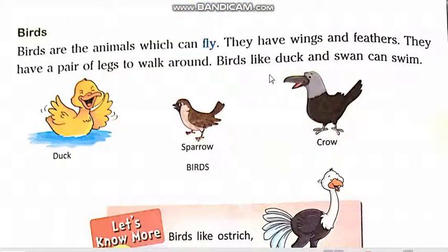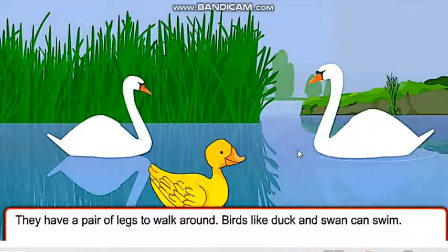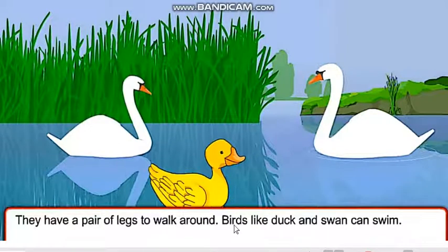Birds like duck and swan can swim. In this picture, you can see these are swan and this is duck. The yellow one is duck. Birds like duck and swan can swim. Birds joh ducks hain aur joh swan hain, woh swim kar sakte hain, tiar sakte hain.